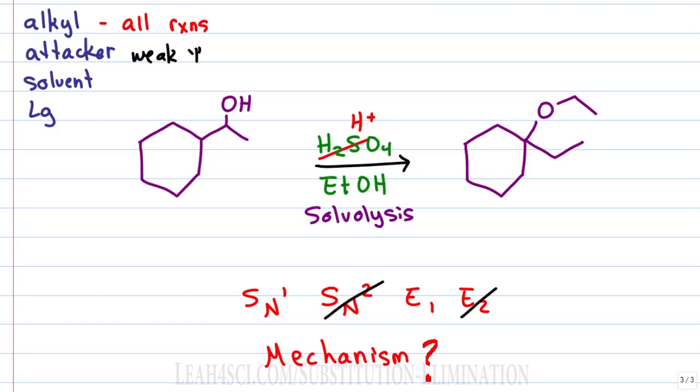Which will it be, substitution or elimination? We don't know, they're both in competition. Next we have the solvent which is ETOH. An alcohol is a polar protic solvent which will be very happy for a one type reaction because it can stabilize the intermediates. We've already ruled out SN2, E2 so it will be SN1 or E1.